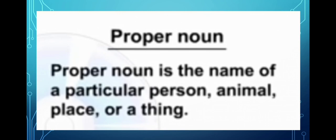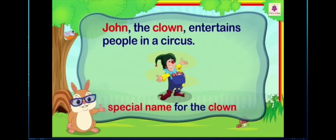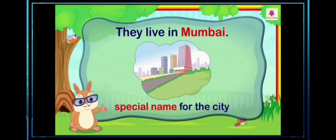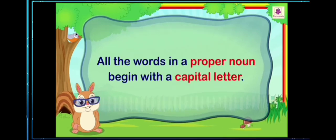Now, it will be more clear by some examples. Like, John the clown entertains people in a circus. In this sentence, we are talking about John the clown. So, John is a special name for the clown. Let's see the second example. They live in Mumbai. In this sentence, we are talking about Mumbai, a city. So, Mumbai is the special name for the city. Now, I have already told you all that all the words in a proper noun begins with a capital letter. It is a must.